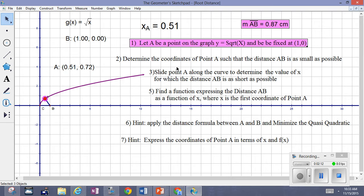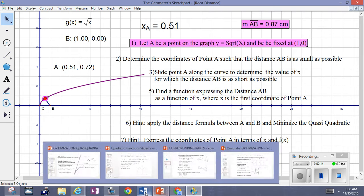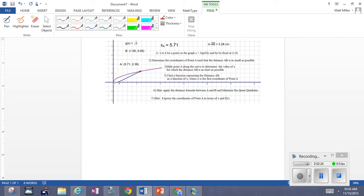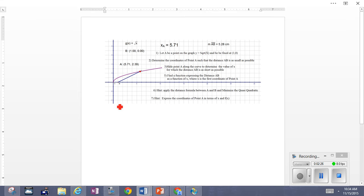Let's work this out. This is another example of a quasi-quadratic problem. We've got the coordinates at B which are known. The coordinates at A are subject to change, so we're simply going to keep those as (x, y). The coordinates at B are (1, 0).